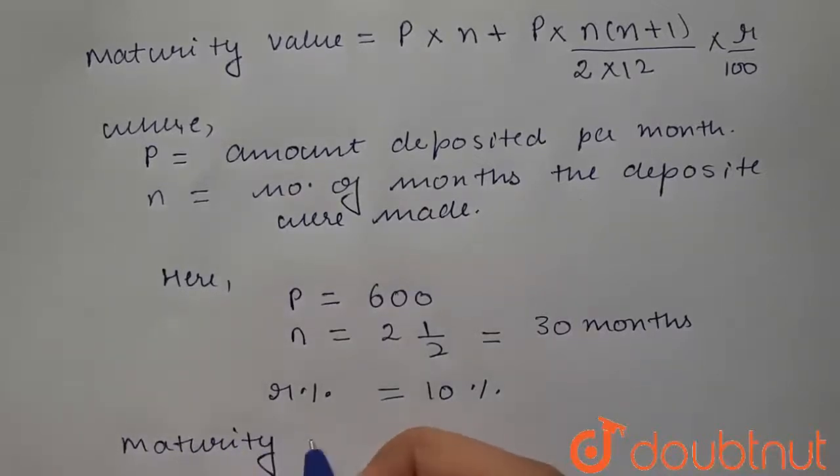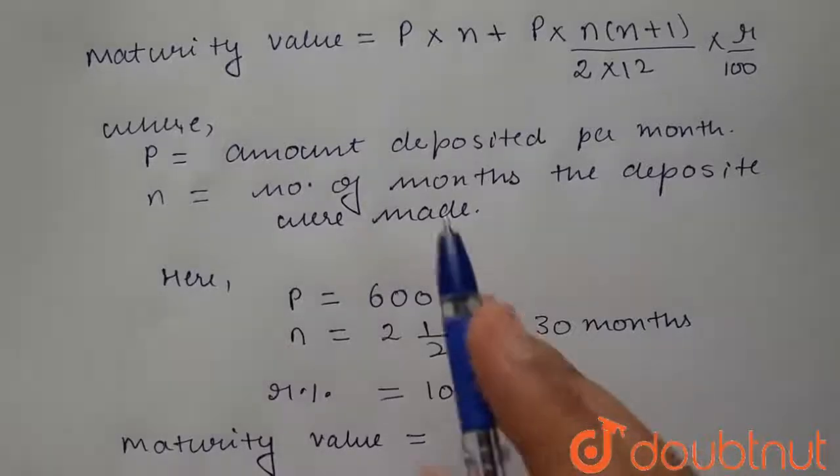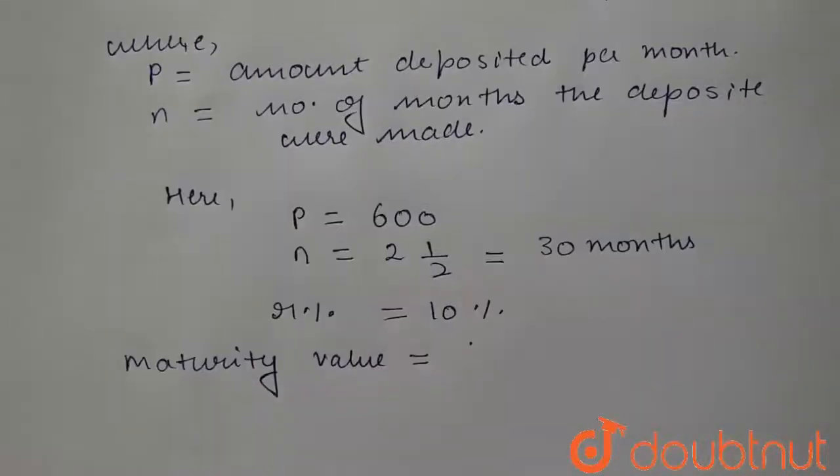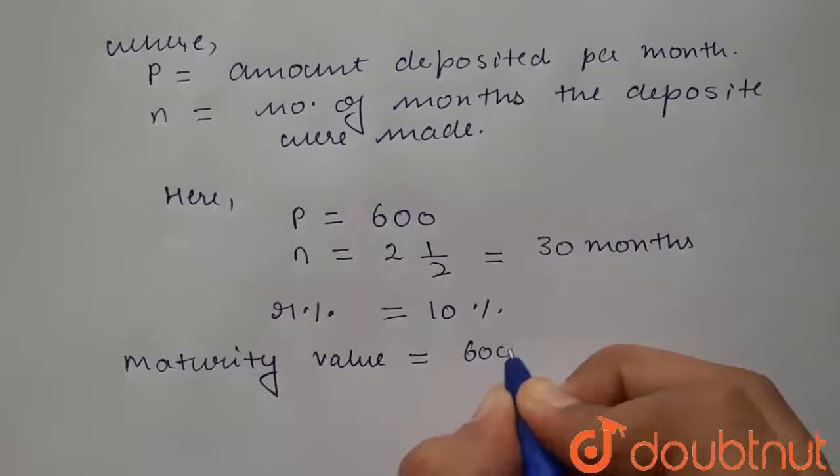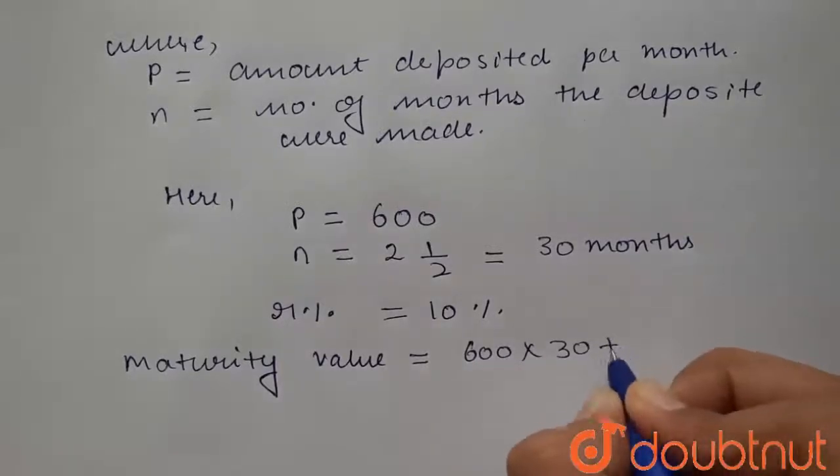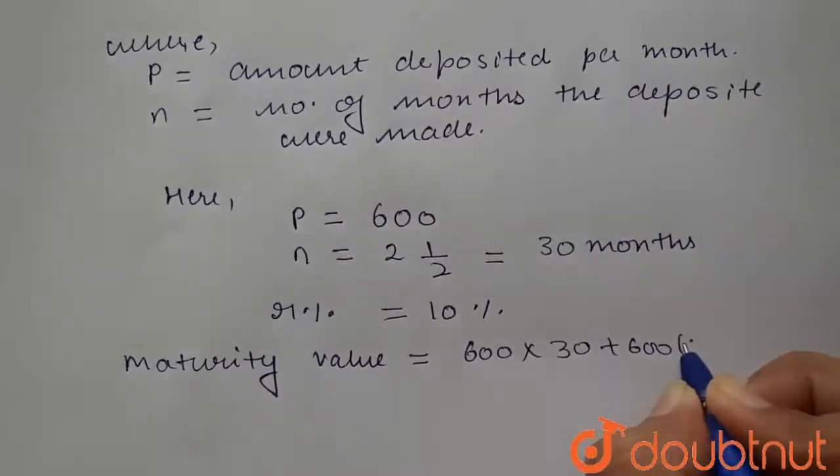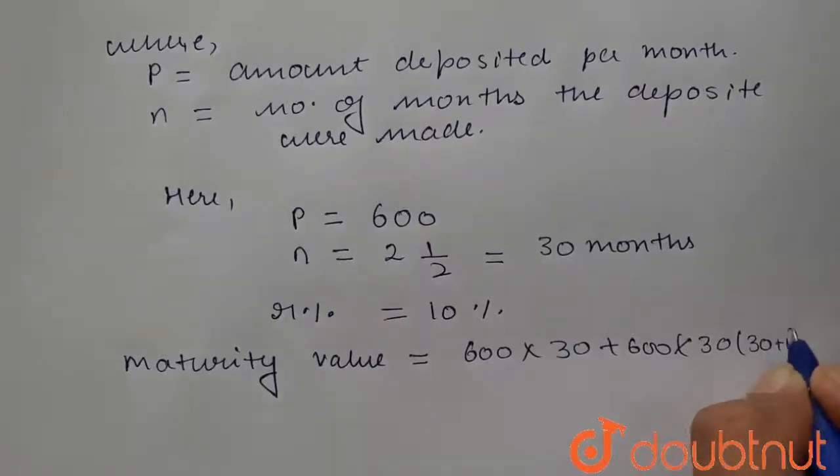will be equal to: 600 × 30 + [600 × 30 × (30+1) / (2 × 12)] ×